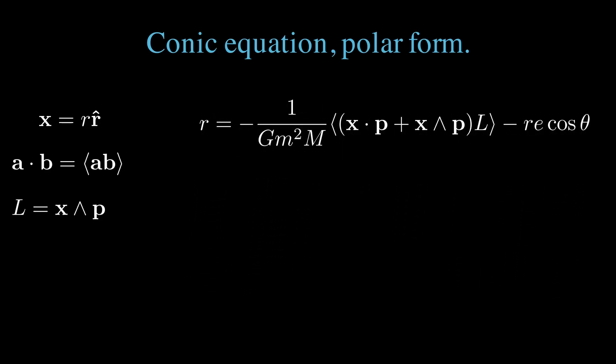x wedge p is the angular momentum. x dotted with p all times l is a scalar times a bivector, which is a bivector. Bivector has no grade zero selection, so that product is killed. We're left with the grade zero term of x wedge p, which is the angular momentum times angular momentum. Angular momentum squared is a scalar, a negative scalar in this case.